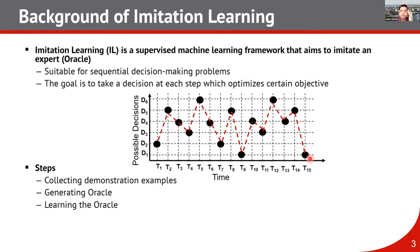In the case of a heterogeneous mobile platform with more than one processor, the decisions can be how many processors need to be switched on, and at the end of the time horizon — in this case t15 — there is a total energy consumption. This decision needs to be taken in such a way that the total energy consumption or total latency is minimized.